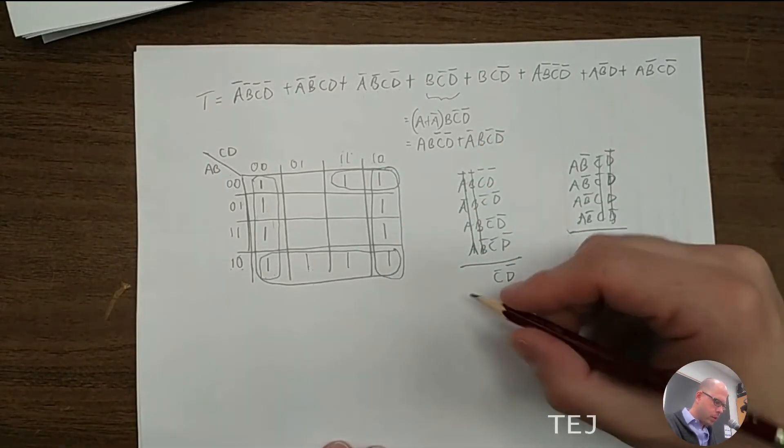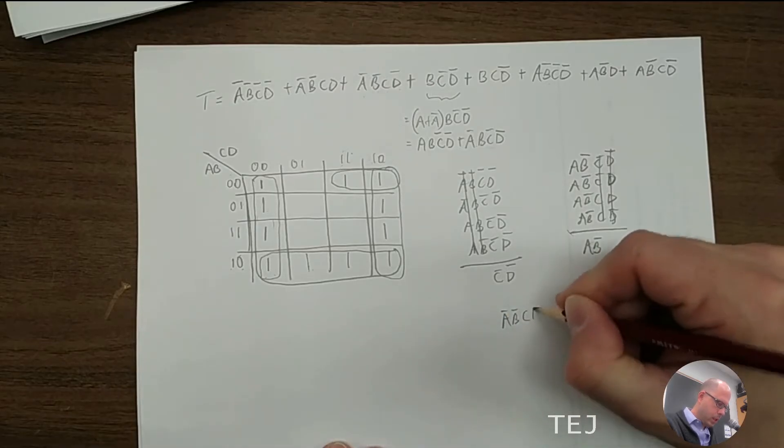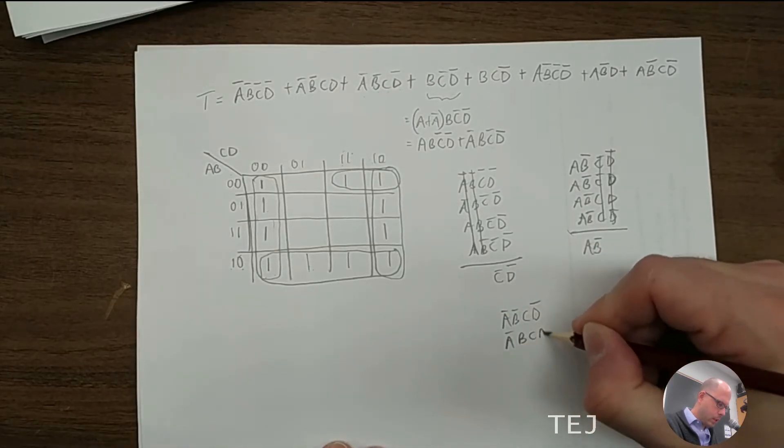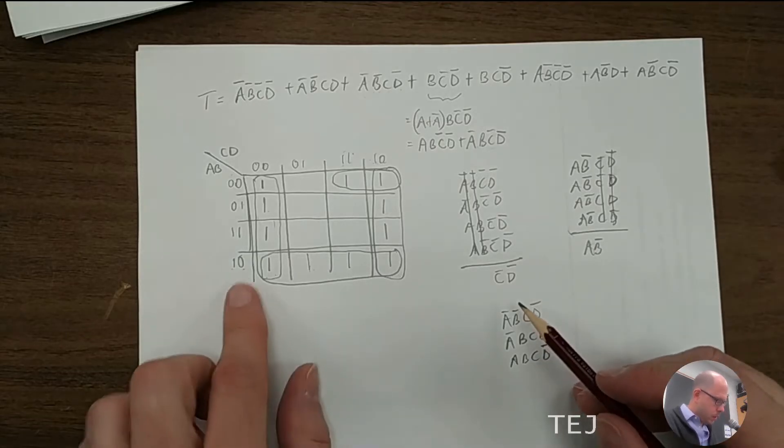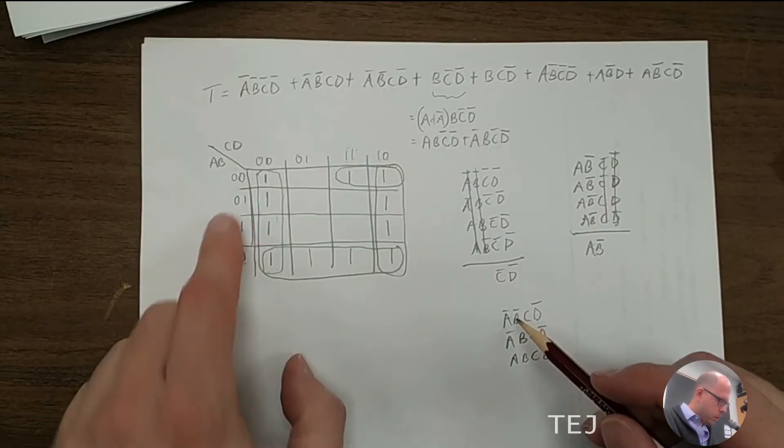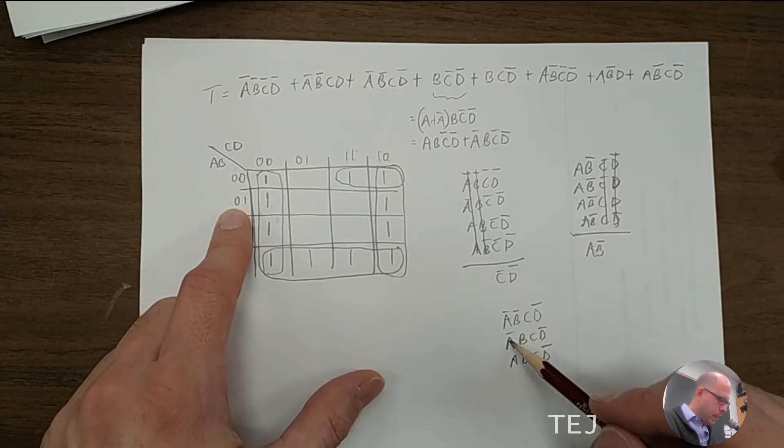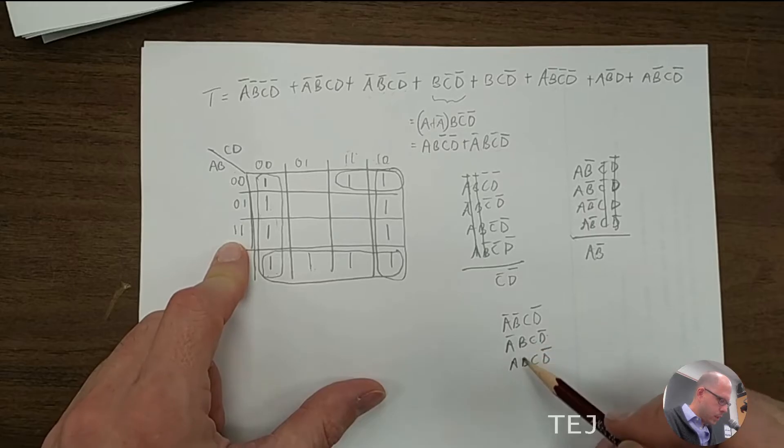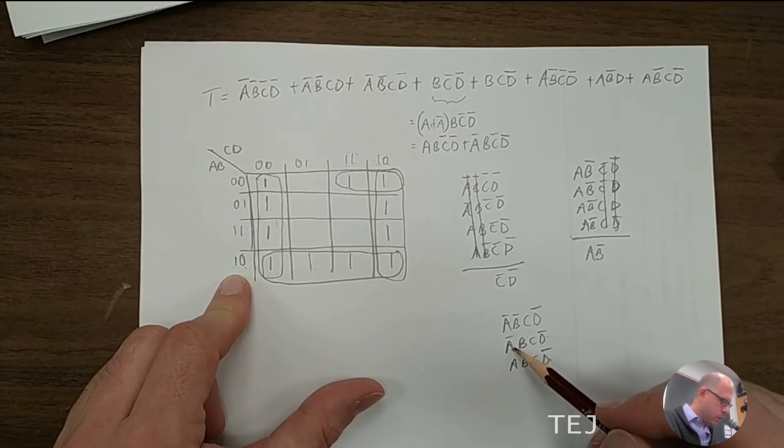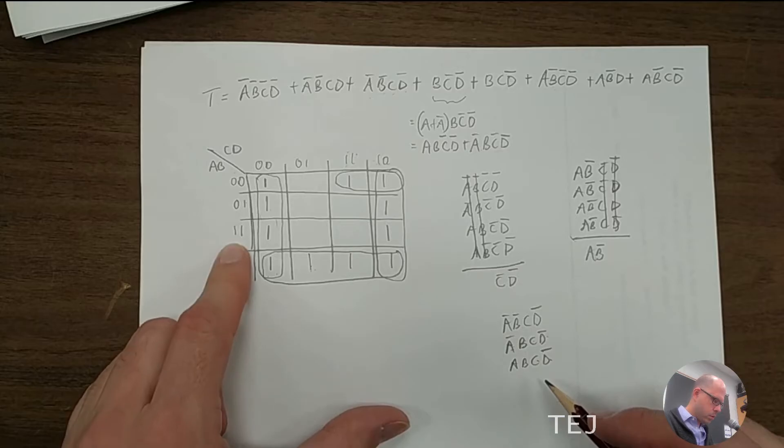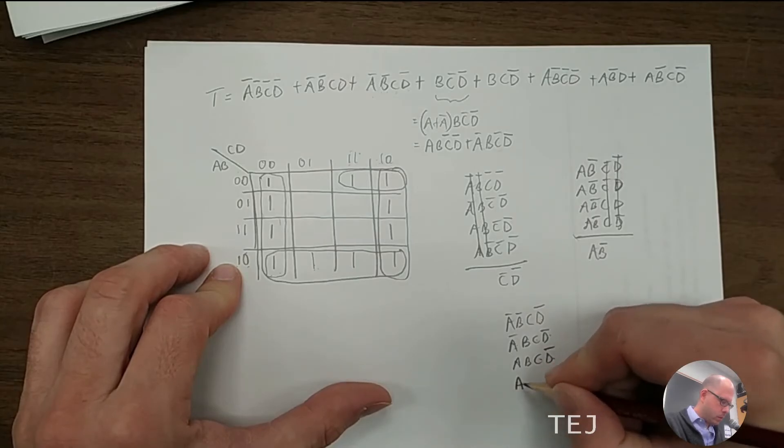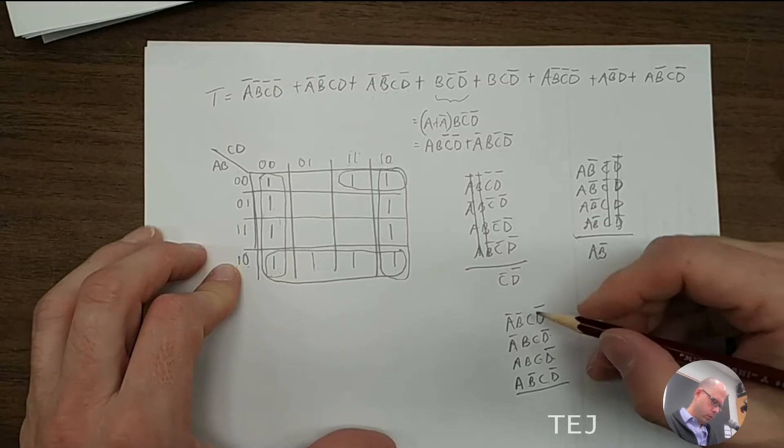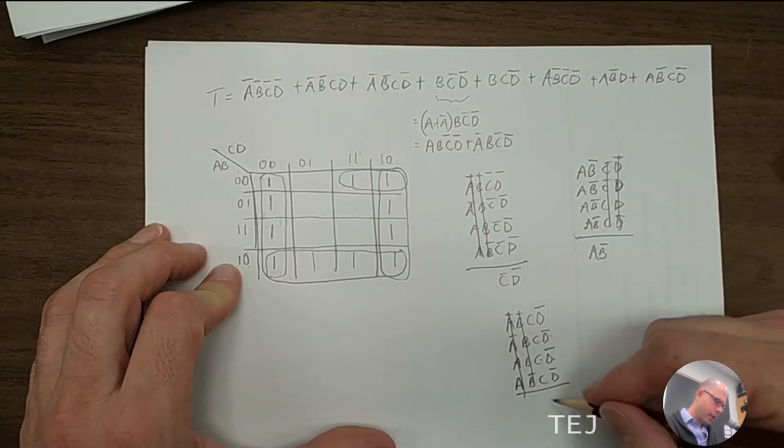On to the third one here, the vertical. So we have a naught, b naught, c, d naught. a naught, b, c, d naught. a, b, c, d naught. And finally, did I do that right? Let's see. a naught, b naught, c, d naught. a naught, b, c, d naught. So a, b, c, d naught. And then where did I get this one from? This should be. Yeah, that's fine. And finally, we have a, b naught, c, d naught. So the b's cancel. The a's cancel. We're left with c, d naught.